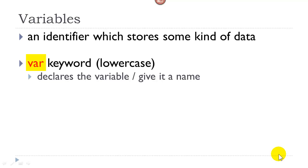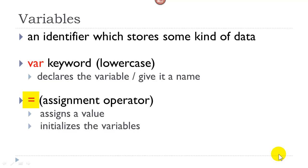We create a variable by using the var keyword, which is lowercase, followed by the name that we are giving to the variable. We use the assignment operator, which is the equal sign, to assign a value to that variable. Technically, this is called initializing the variable because we have given it a value at the same time we have created it.